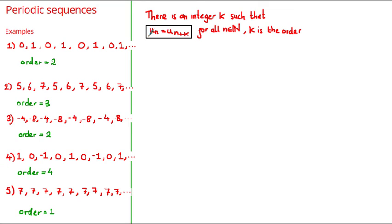We should already know that u sub n represents every term in the sequence, and therefore if k is an integer then u sub n plus k must represent some other term further along in the sequence. So a way you could look at this definition is that every term in the sequence is equal to some other term further along in the sequence, and this definition actually spans across all of the terms in a periodic sequence.